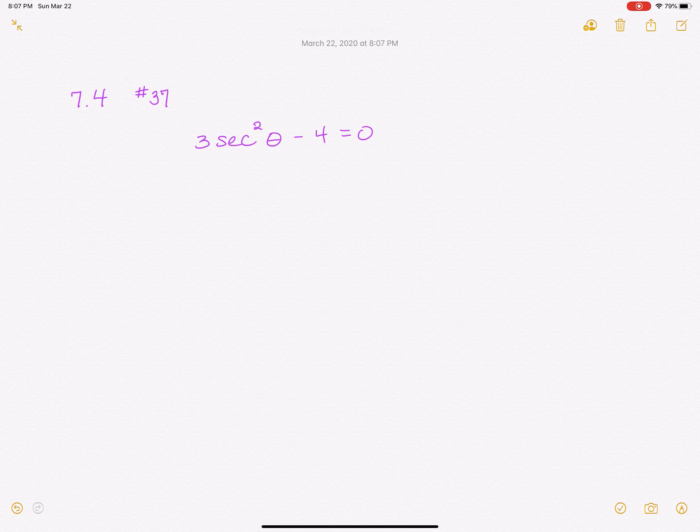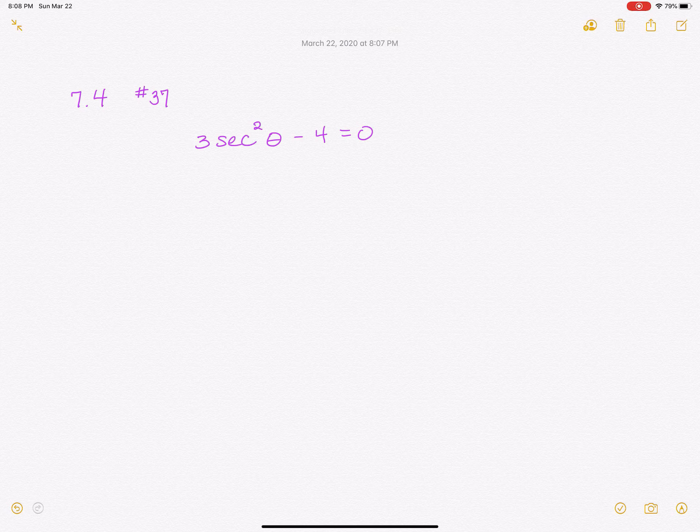Okay, I want to work number 37 from 7.4 just to show you all what happens if you end up with secant or cosecant or cotangent and also what happens when you take the square root of something.